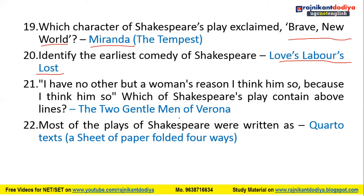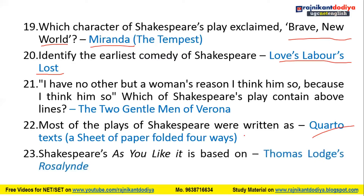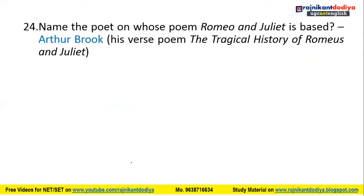Most of the plays of Shakespeare were written as Quarto texts, meaning a sheet of paper folded four ways. Shakespeare's As You Like It is based on Thomas Lodge's Rosalind. There is also a character named Rosalind in Shakespeare's As You Like It.